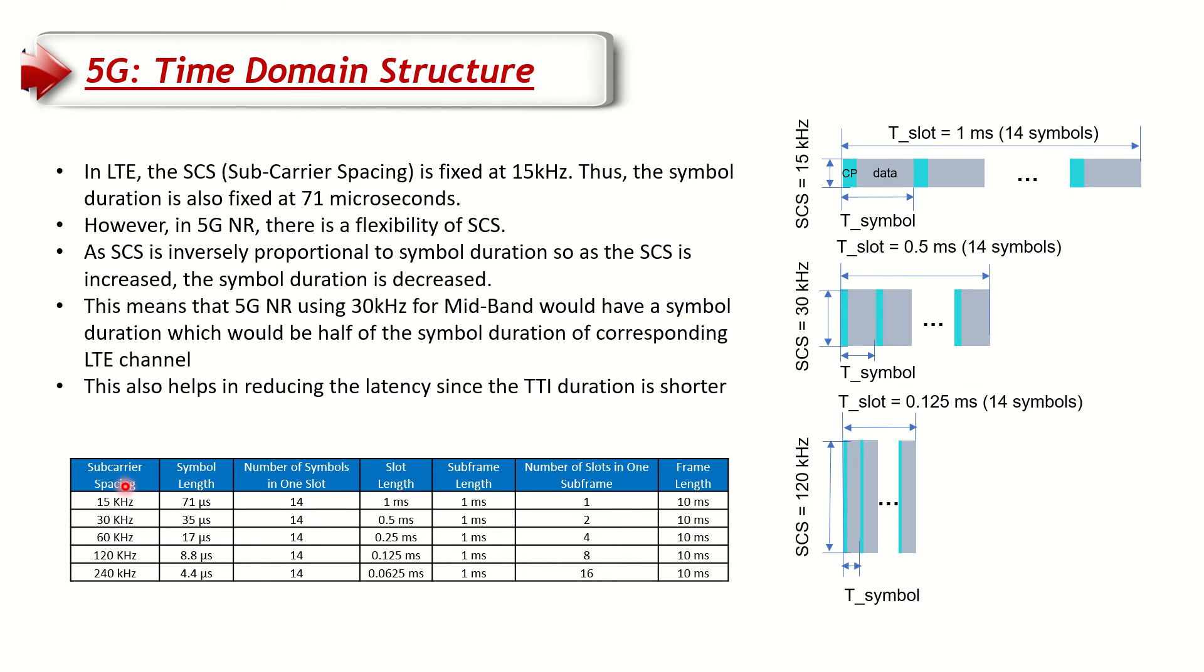However, in 5G we have a flexibility that is called numerology, so flexible numerology means that we can have multiple values of subcarrier spacing in frequency domain. If we use 30 kilohertz, it means our symbol length will be 35 microseconds. 30 kilohertz is double of 15, so because the time is inversely proportional to frequency, the symbol duration is half of 71.